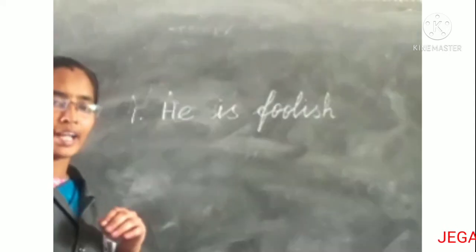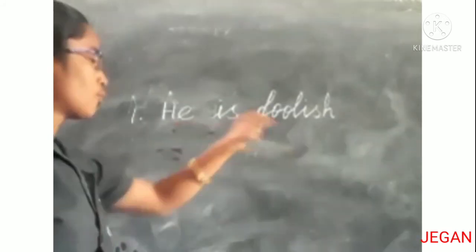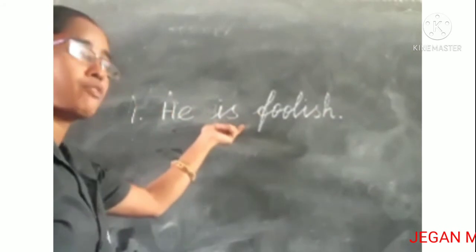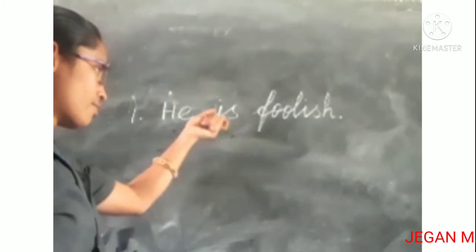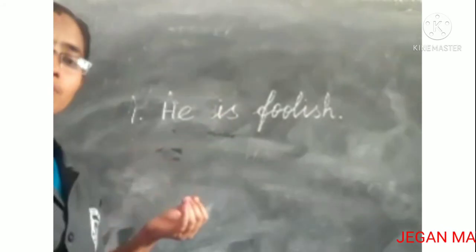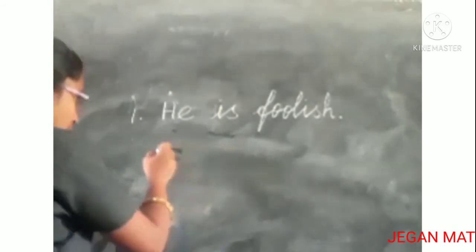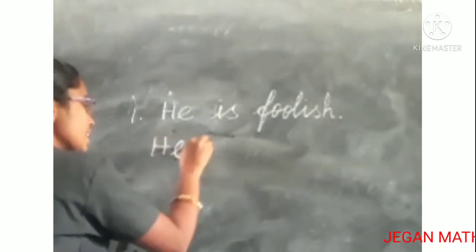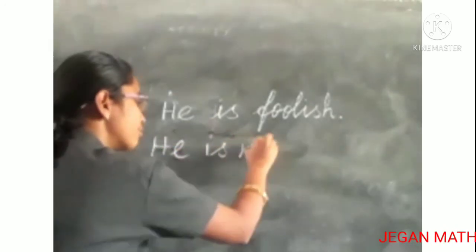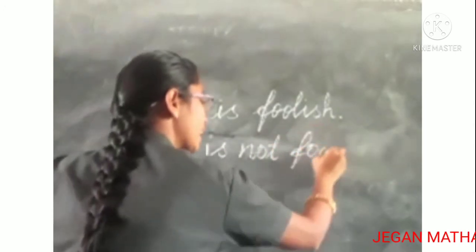Now let's see our book exercise. Change this sentence into negative: 'He is foolish.' Here the verb is a be-form verb in present tense, so we add 'not' after the verb. The answer is: 'He is not foolish.'